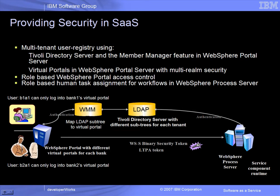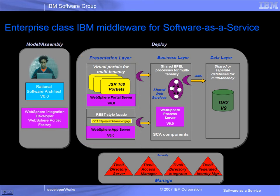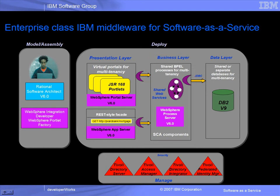More details can be seen in the set of three security demos. This chart depicts IBM's enterprise class offerings which were used to build the sample software-as-a-service banking application. WebSphere Portal Server Version 6.0 was used to build virtual portals with configurable JSR-168 standard portlets for supporting multi-tenancy. WebSphere Process Server Version 6.0 was used to host shared SCA modules, BPEL processes, web services, and J2EE components for multi-tenancy. DB2 V9.1 was used to build shared databases.